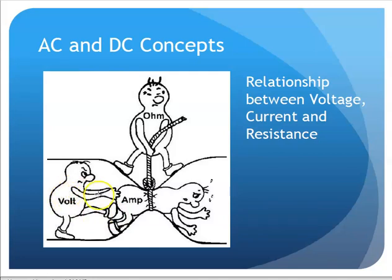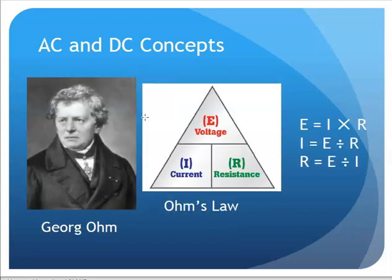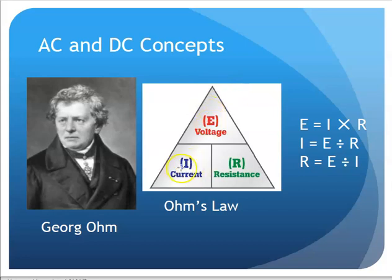There's a relationship between the three: voltage, current, and resistance. Voltage is the pressure pushing electrons through the wire, and ohms is the resistance constricting the electrical flow. This was all figured out by George Ohm — hence the name 'ohm' for our resistance measurement. He put it into a formula: E equals I times R. You can calculate voltage as E = I × R, current as I = E ÷ R, and resistance as R = E ÷ I — allowing you to calculate any of the three values in your circuit.